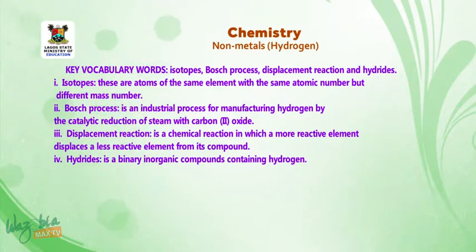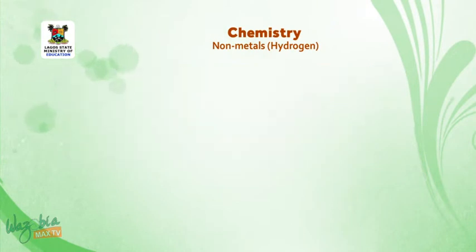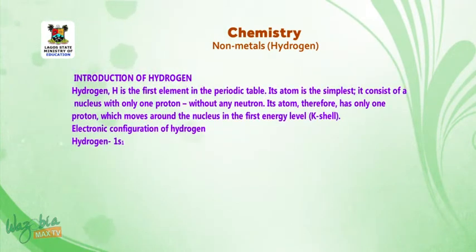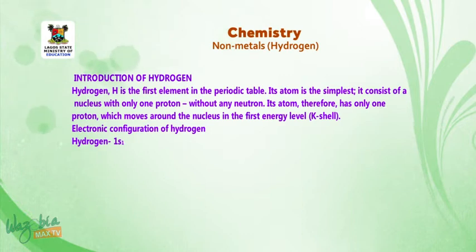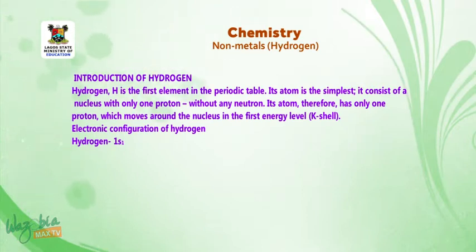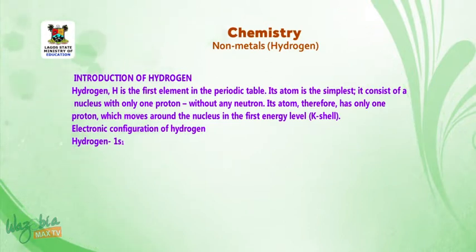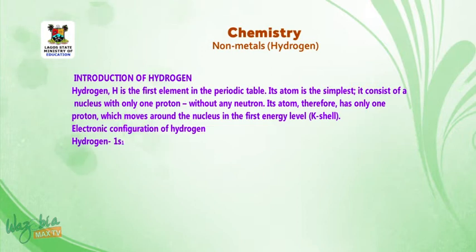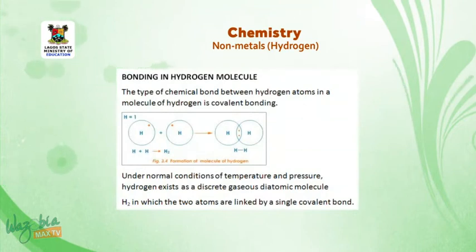Hydrides are binary inorganic compounds containing hydrogen. Introduction of hydrogen: Hydrogen, with the symbol H, is the first element in the periodic table. Its atom is the simplest — it consists of a nucleus with only one proton without any neutron. Its atom therefore has only one electron which moves round the nucleus in the first energy level, which is the K shell. Electronic configuration of hydrogen: Hydrogen has the electronic configuration of 1s¹.